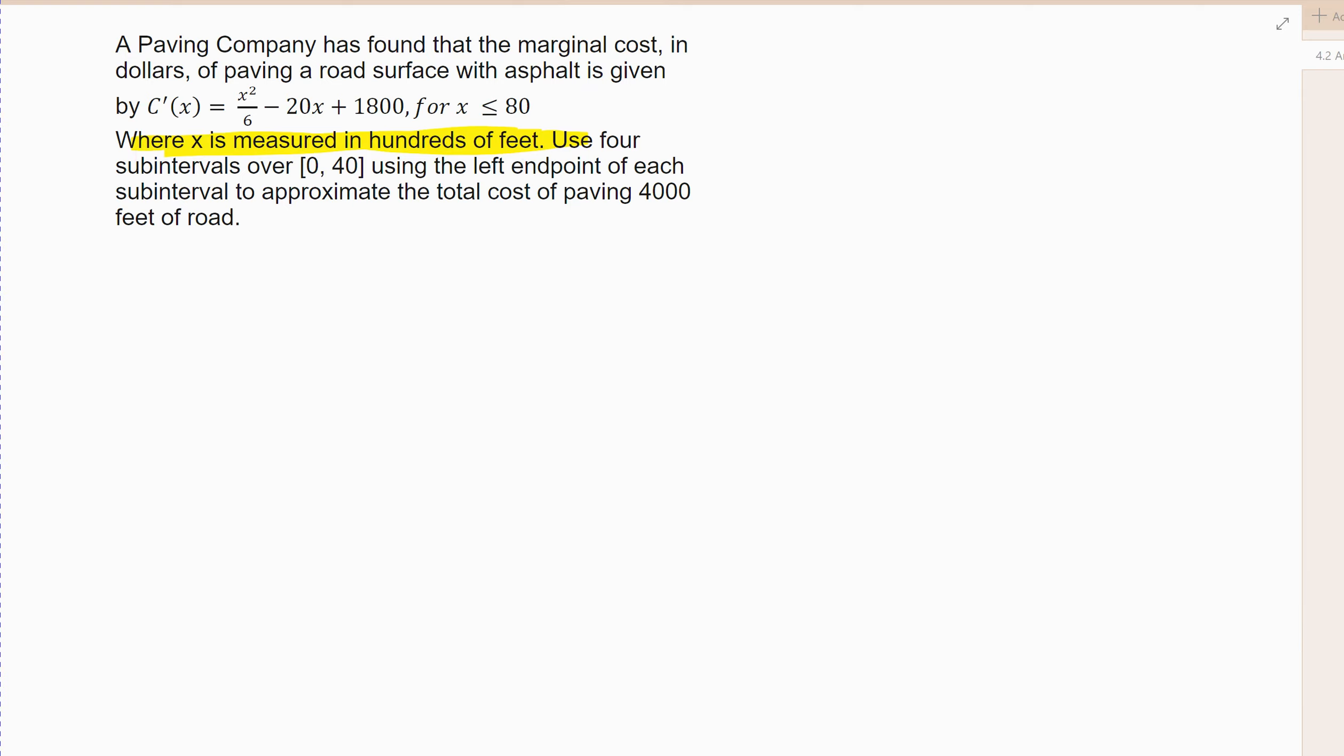Alright, where x is less than 80. So apparently they can only do 8,000 feet, right? If you took 80 times 100, that'd be 8,000. Alright, over 0 to 40, use 4 subintervals.